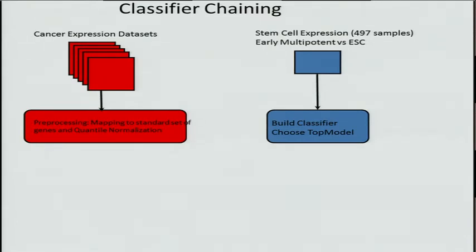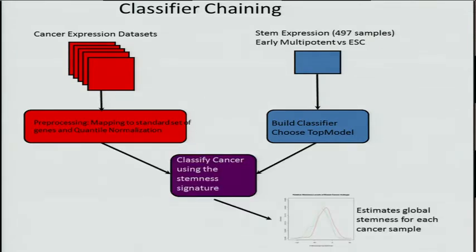Independently, we take the cancer expression data sets — such as the ones from the TCGA — and we normalize them in the same way. Then we apply the classifier trained using the embryonic stem cell data, or various other data, to the cancer genomics, to see if we can detect signal proliferating in cancer that is erroneously activating.